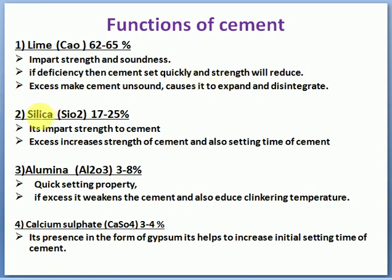Silica (SiO2), 17 to 25% — it imparts strength to the cement. The more silica you add, the more the strength increases compulsorily. Also, setting time of ordinary Portland cement is 30 minutes. If silica content is increased beyond 25% — say 27, 28, or 30% — the initial setting time will also increase, causing the cement to set faster, which creates problems in strength properties.